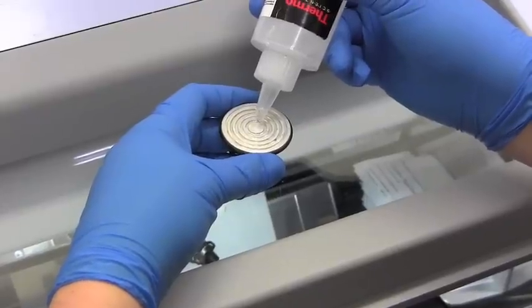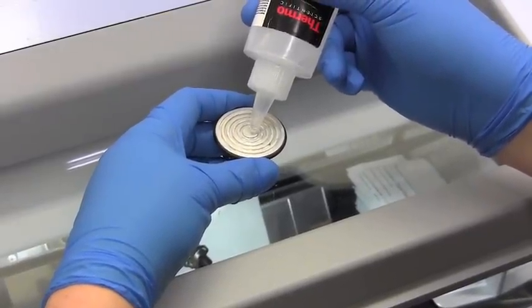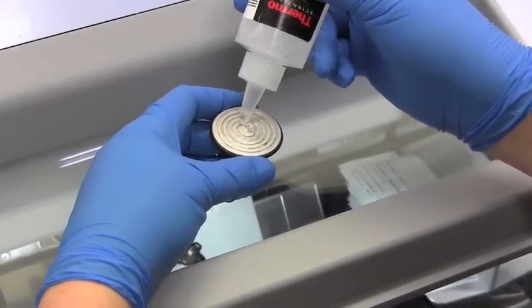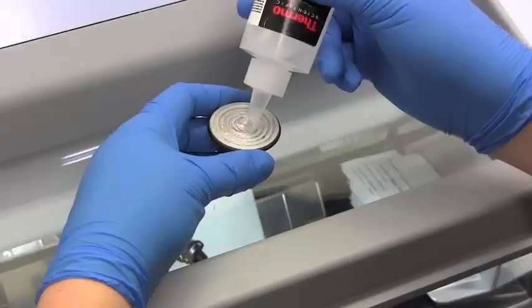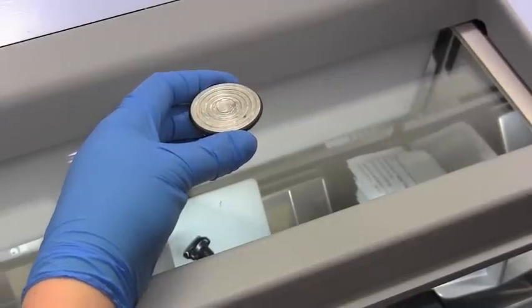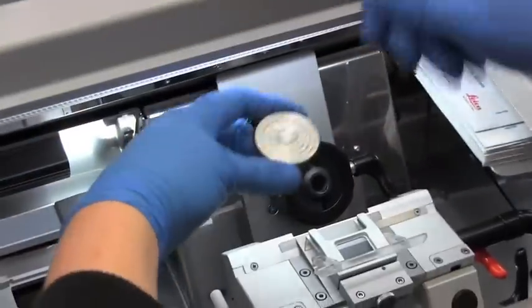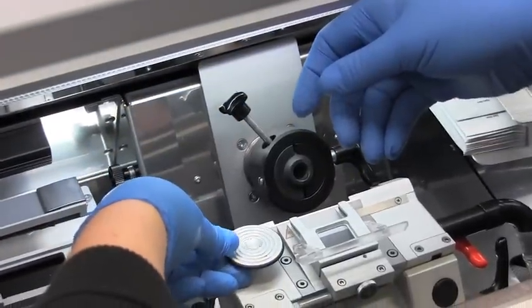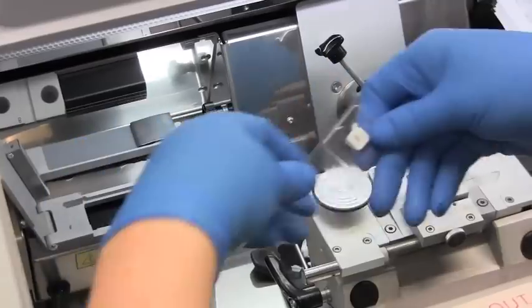To mount your sample, you don't want to have any bubbles in the tip of the cryo matrix because that will make a weaker bond. Put a nice thin layer, and this is room temperature, and then our sample is here.